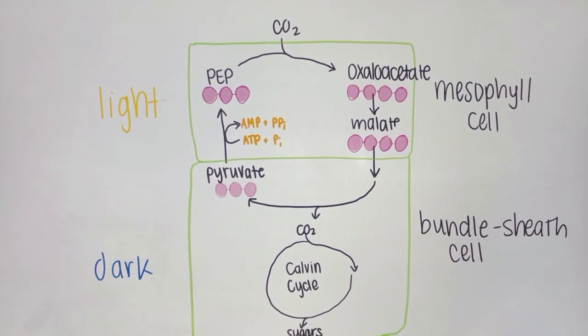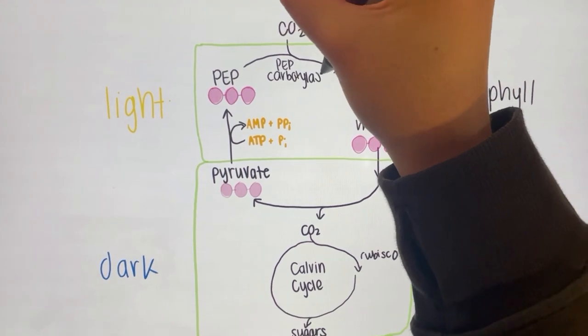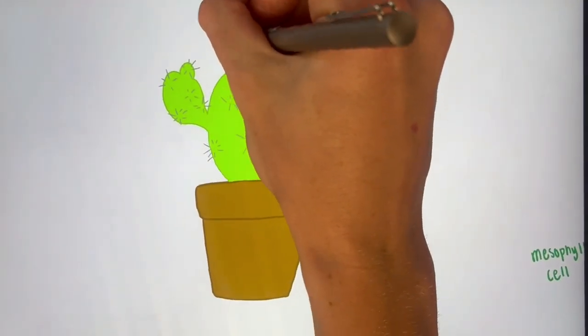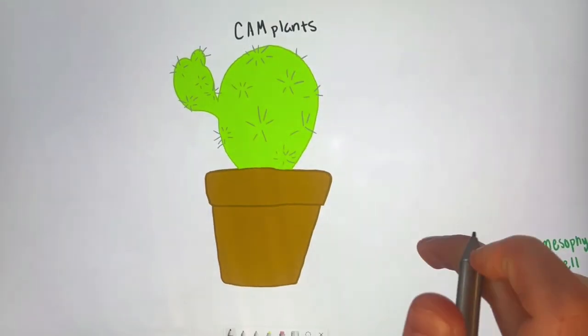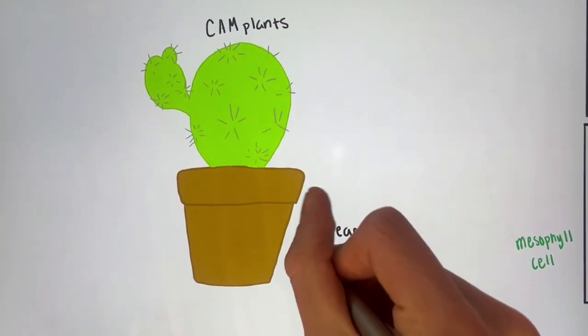CO2 is then fixed by rubisco and made into sugar via the Calvin cycle, causing it to perform photosynthesis as normal. Another type of plant similar to C4 plants is CAM plants. These plants include pineapples, cacti, and agave.